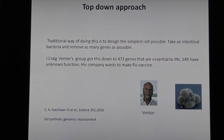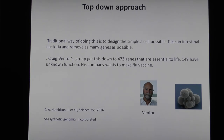Now we're going to start the top-down approach: start with something living and reverse-engineer it. The first example is J. Craig Venter, who is in the news a lot. He has a company and an institute, and was involved in originally sequencing the human genome about 20 years ago. What he's doing now is very interesting — he took a cell from a human intestine, one getting all its nutrients from the intestinal fluids, so it doesn't have a lot of genes or much metabolism. He started removing every gene he could and still keep the cell alive. He got it down to 473 genes and it lives and divides — that's the simplest living thing I know of.